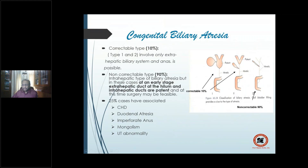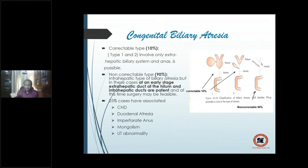Unfortunately, the most common type is non-correctable — type 3 — where the intra-hepatic and extra-hepatic channels are all atretic, with only a thin streak of gallbladder visible. Non-correctable type represents 90 percent of cases. The child should be operated as soon as diagnosed — immediately after birth — looking at the hilum for any residual patent extra-hepatic biliary channel.